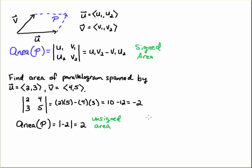So be careful that you're clear on what your instructor is asking you if they want signed or unsigned area. Typically when you're calculating the area of a parallelogram, the assumption is that it's an unsigned area and you're going to take the absolute value of the resulting determinant.